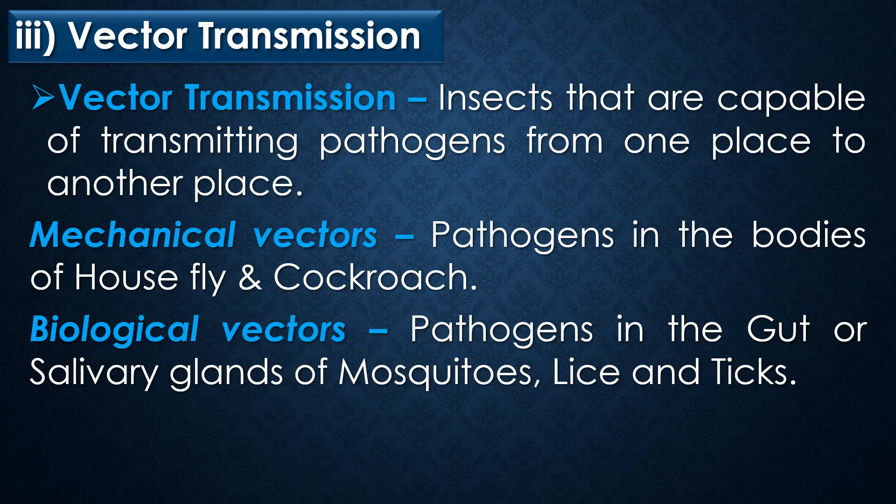The third and final mode of transmission is vector transmission. Insects capable of transmitting pathogens from one place to another are called vectors. There are two types: mechanical vectors and biological vectors. In mechanical vectors, pathogens are present on the bodies of houseflies and cockroaches. In biological vectors, pathogens are present in the gut or salivary glands of insects like mosquitoes, lice, and ticks.